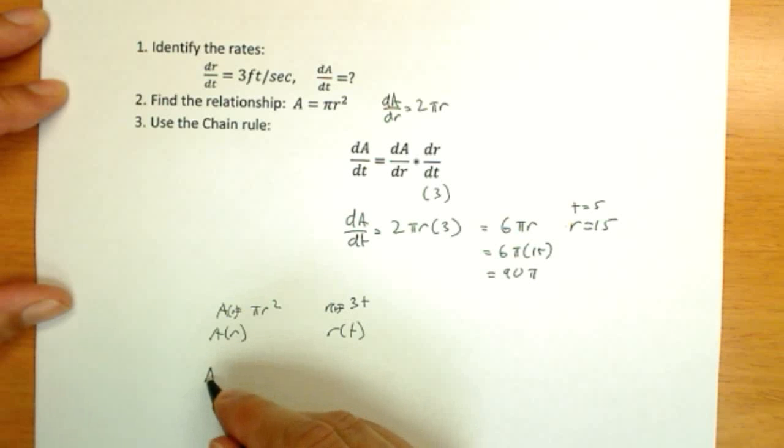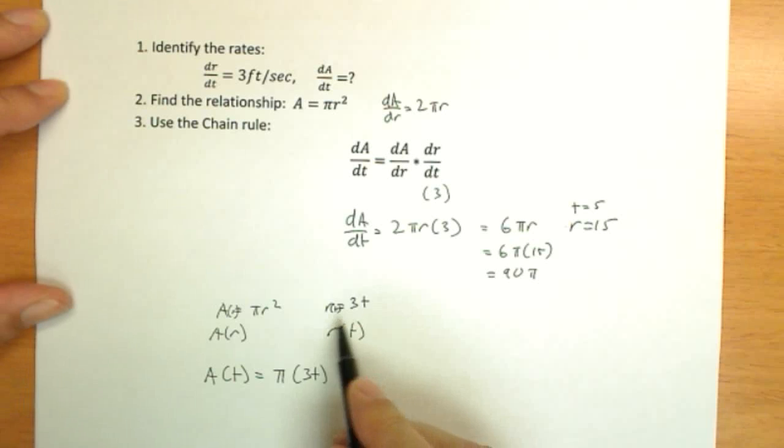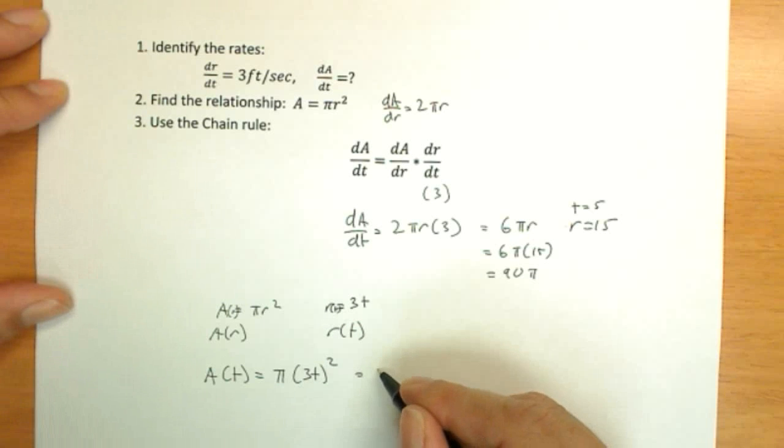So I could find a new function, A as a function of t, by performing this composition of functions, pi 3t, that's what r is, then squared, which would simplify down to pi times 9t squared.